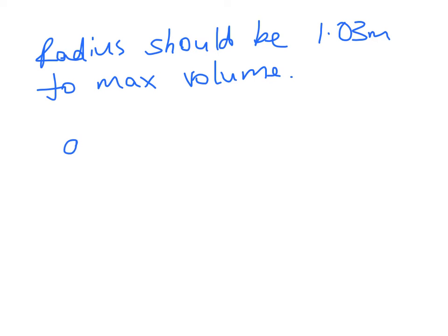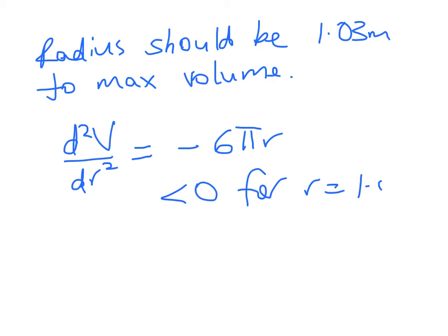Now we should also check second derivative. So the second derivative here is going to be equal to negative 6 pi R which is less than 0 for R equals 1.03. Therefore we have found a maximum. So that's the first question done. Hope that helped but please do let me know if you find any mistakes or anything that's not clear. Thanks for watching.